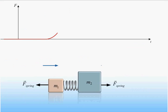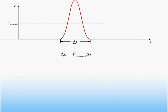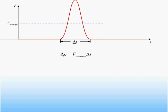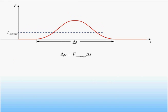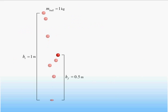We have just determined that the change in momentum of an object during a collision is equal to the product of the average force acting on that object and the time over which it acts. Therefore, we can achieve the same change in momentum by having a large force acting for a short time as we can having a small force acting for a long time. Here we see a 1 kg ball released from rest from an initial height of 1 m above the floor. It bounces back to half its original height. If we assume the ball is in contact with the floor for a time of 10 ms, what is the average force on the ball during the collision?